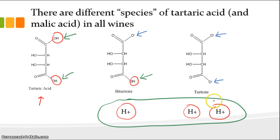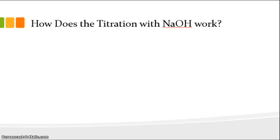A stronger acid will release more protons in solution. In this case, we have a medium-strong acid. But no matter how many protons are released in solution, if you have protons left behind, pH is not going to measure them. So we have pH and titratable acidity as two ways of measuring acids in wine. How does titratable acidity actually work?